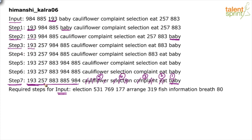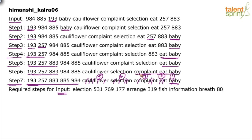In step three, 193 is already fixed so we bring the next number, 257, to the second position. In step four, we bring the next word, eat, before baby. In step five, we move one more number. In step six, we bring the word complaint. In step seven, the number 885 is placed, and at that point cauliflower and selection are already in the correct positions, so we stop.